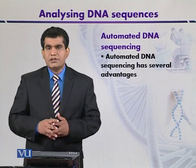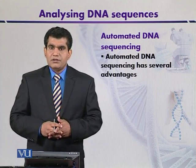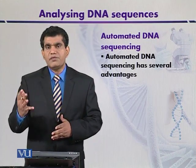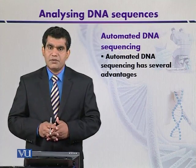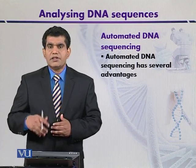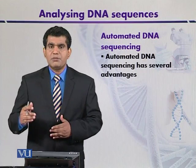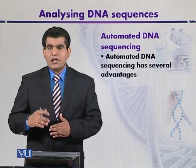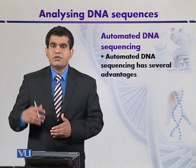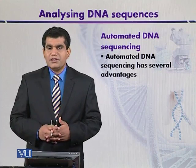Another advantage is that in manual sequencing four different lanes are required for four different reaction mixtures, but in automated sequencing all four reactions can be loaded on a single lane. There are now sequencers where capillary tubes are used, which may contain 48 or up to 96 capillary tubes, allowing analysis of up to 96 different samples. One can thus analyze thousands of nucleotides within a short course of time. These are a few of the advantages of automated DNA sequencing.